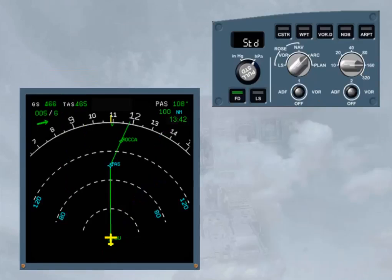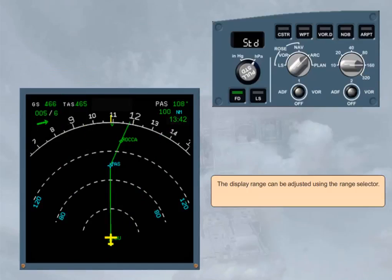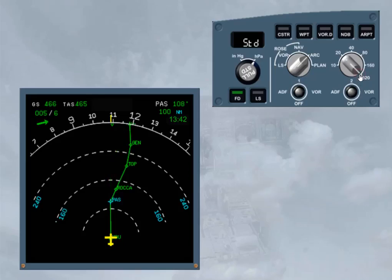Range marks are displayed by white dotted lines, while range values are depicted in blue. The display range can be adjusted using the range selector. Select 320 mile range. You can now see more of your flight plan, and that the range values have changed accordingly. Let's study the ND individual modes.